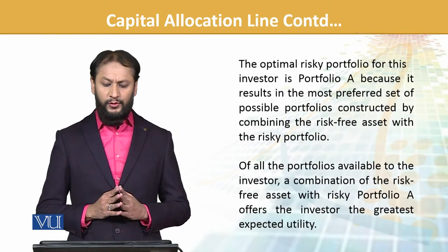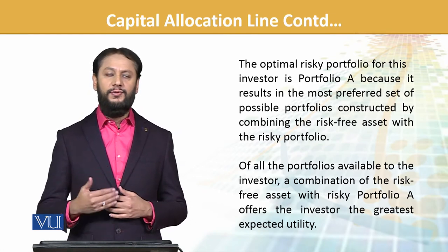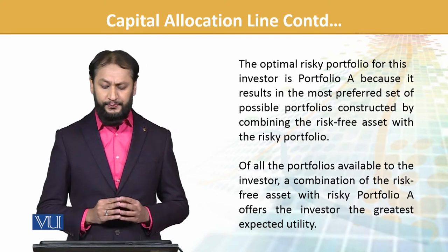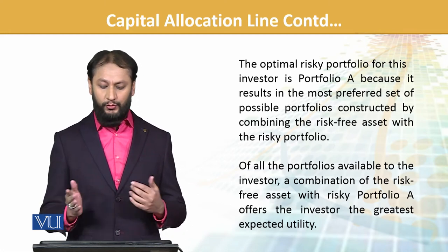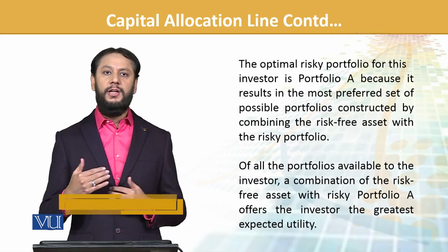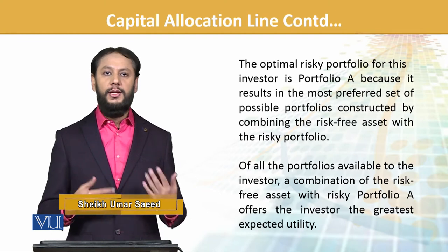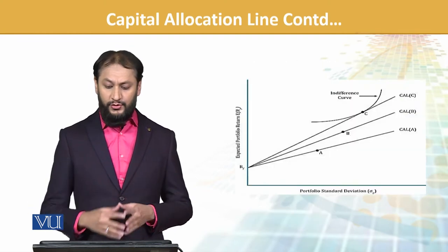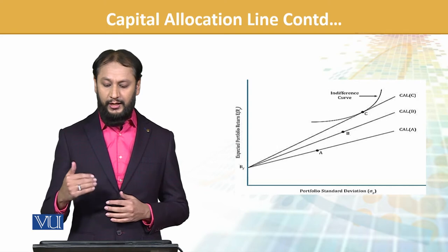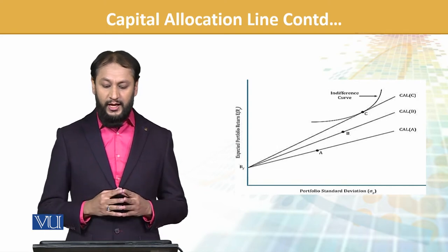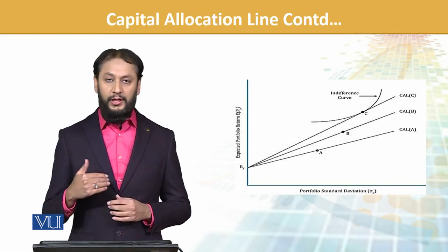The optimal risk portfolio for an investor is combined using the risk-free rate and the risky portfolio. Given the possibilities, we have to see which one makes more beneficial sense to the individual based on their appetite and requirements. We have different types of CAL — CAL A, CAL B, and CAL C — and they have different risk levels and returns.